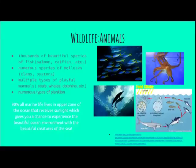The ocean contains thousands of beautiful species of fish such as salmon, catfish, and many more. There are also numerous species of mollusks such as clams and oysters, multiple types of playful mammals such as seals, whales, dolphins, and many more, and numerous types of plankton.